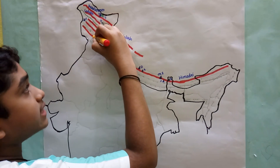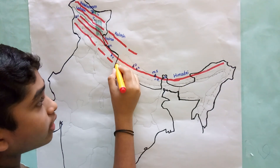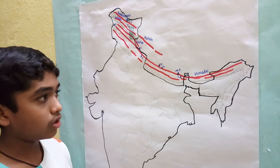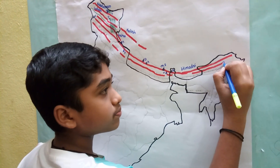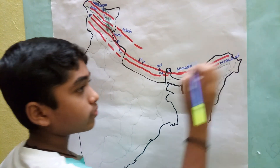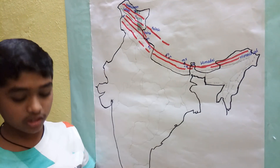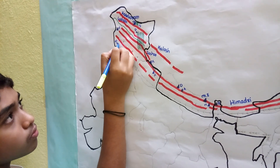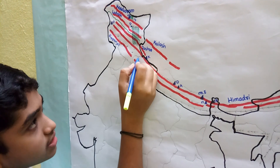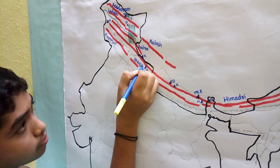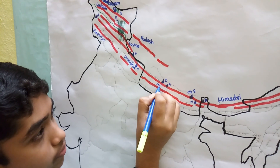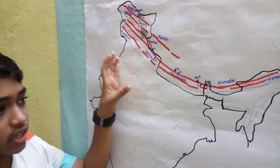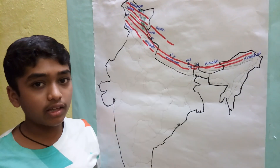This is Himachal, which is an unchained range, unlike Himadri. Some important ranges within Himachal are Pirpanjal, Dhaulagiri, and Mahabharat. Pirpanjal is the longest range in India within Himachal, while Mahabharat is the longest only within Himachal Pradesh.